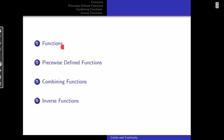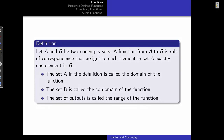So first we will go ahead and talk about the definition of function. Let A and B be two non-empty sets. A function from A to B is a rule of correspondence that assigns each element in set A exactly one element in B. Set A is called the domain and set B is called the co-domain of the function. The set of outputs is called the range of the function.